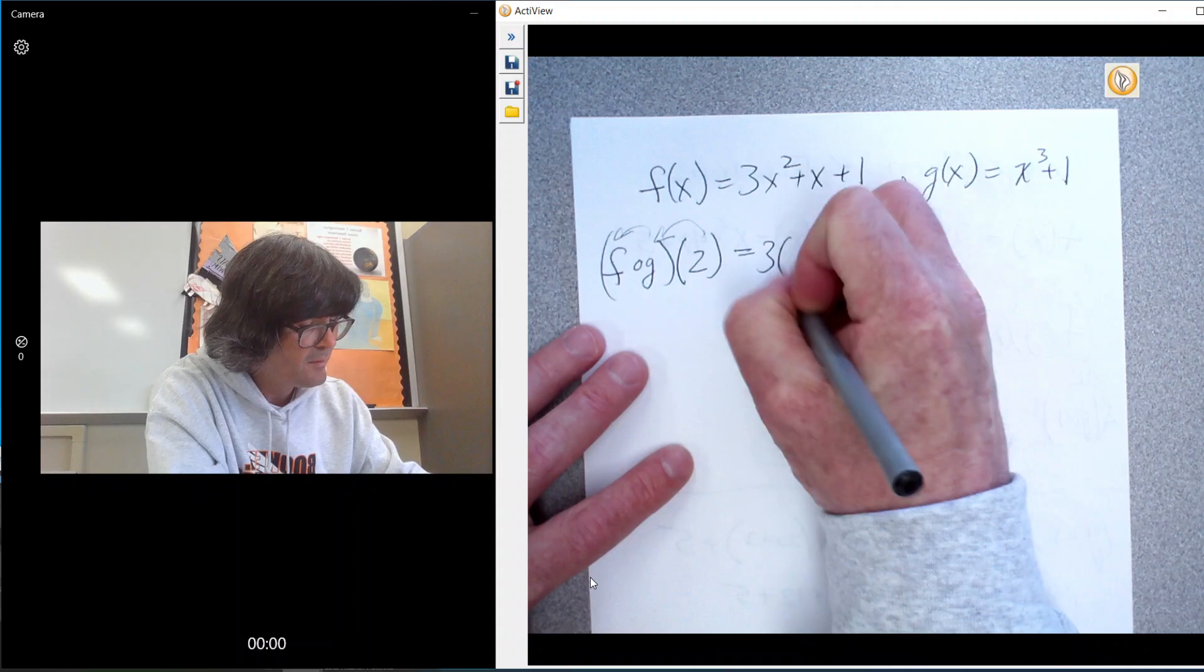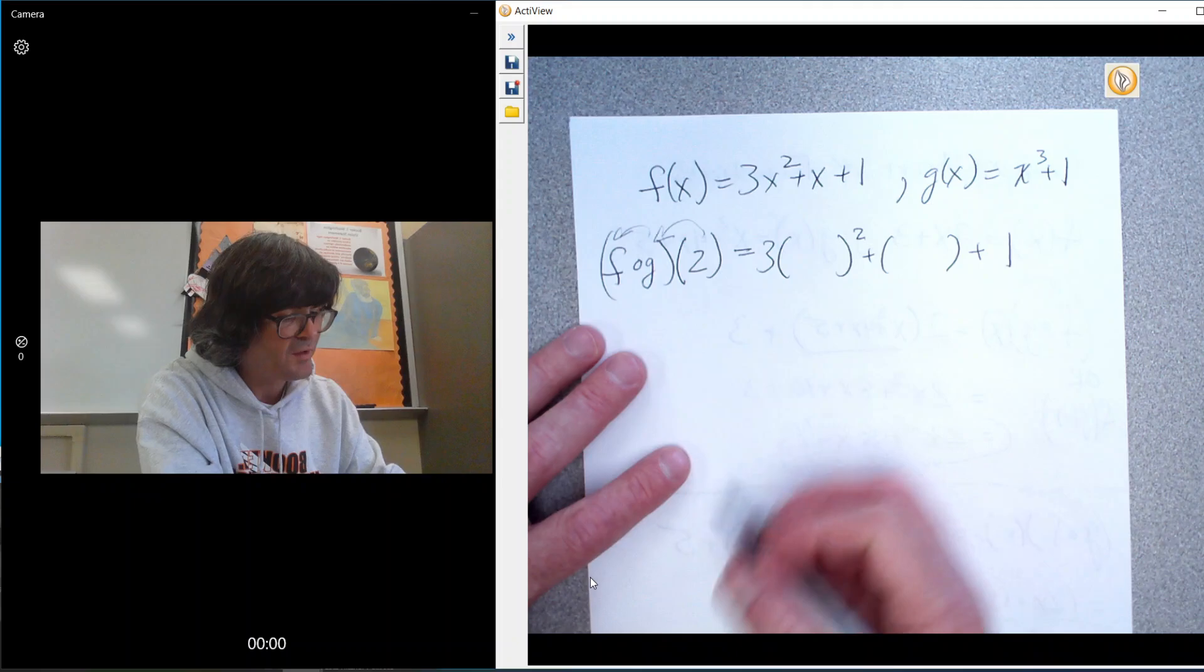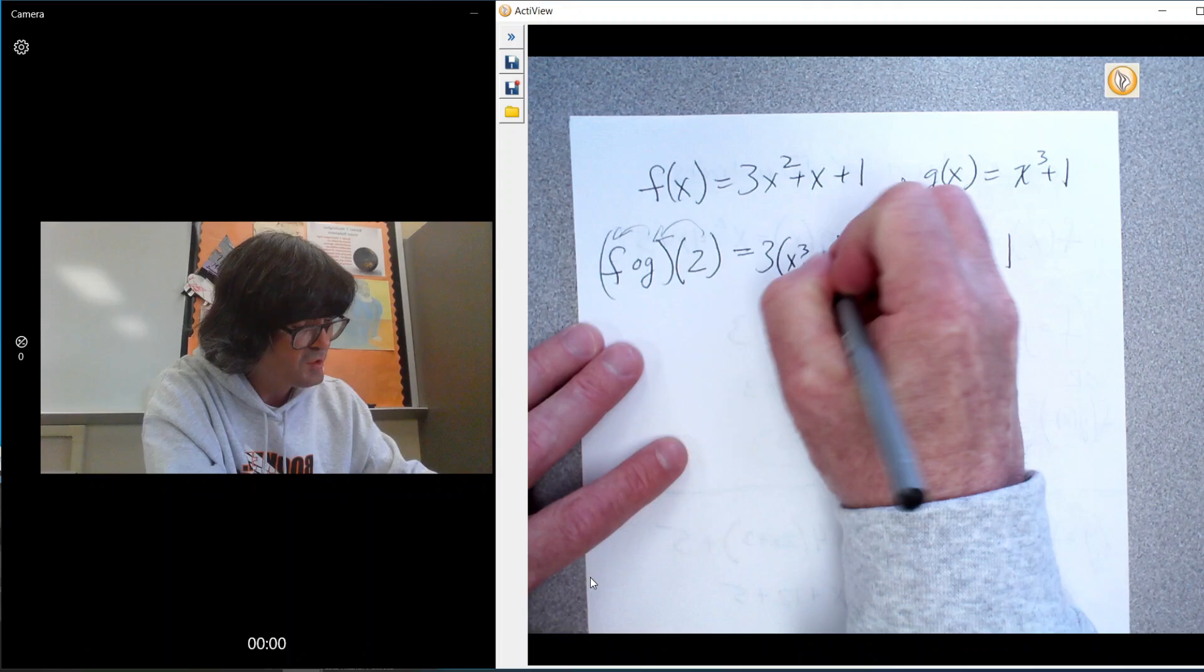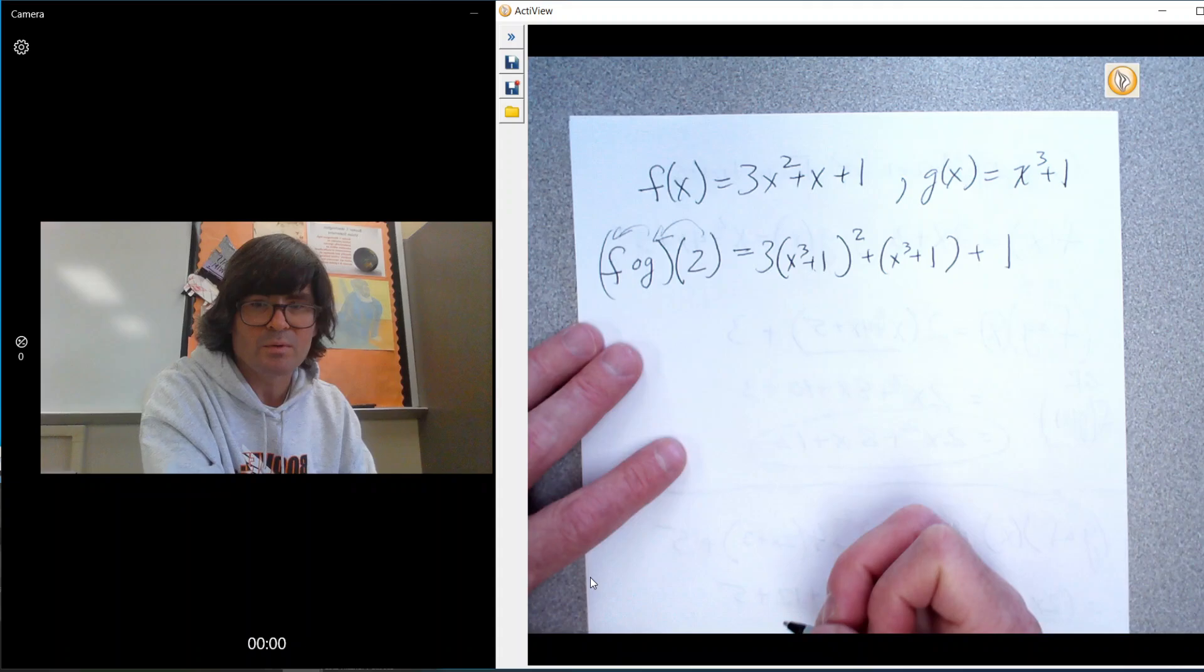Function f currently is 3x squared plus x plus 1. So if I put function g into here, where we used to have an x in here, you just have x cubed plus 1, x cubed plus 1.